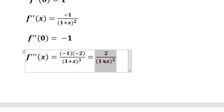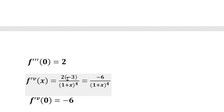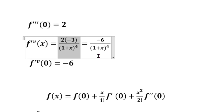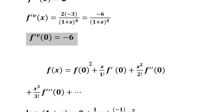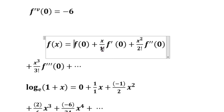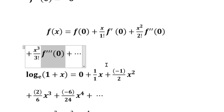Continuing, differentiating 2 by x cubed gives minus 6 by 1 plus x whole power 4 using the formula. Substituting x equal to 0, the numerator value gives f to the 4th dash of 0 equals minus 6.